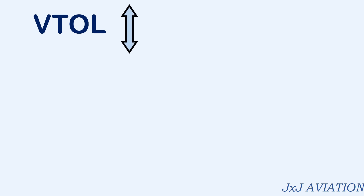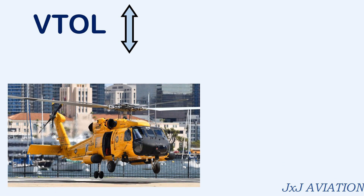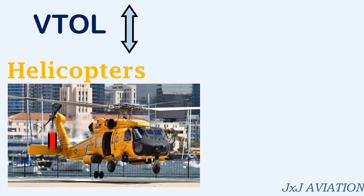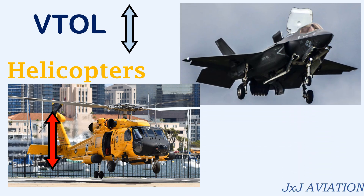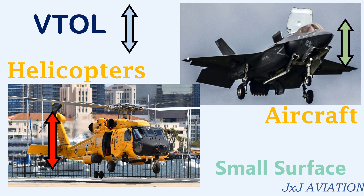Now let's look at what is meant by vertical takeoff and landing. These are aircraft that can take off and land vertically. The best example of VTOL is rotary wing aircraft or helicopters. A few fixed wing aircraft are also capable of taking off and landing vertically. These aircraft would require a very small flat surface to take off and land.